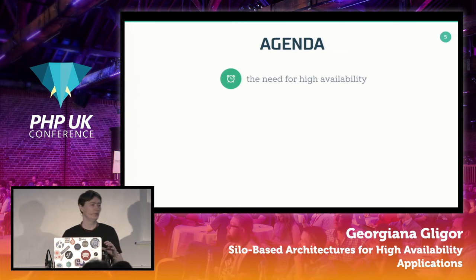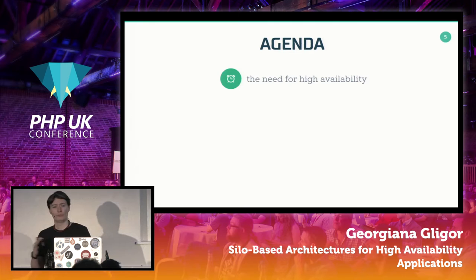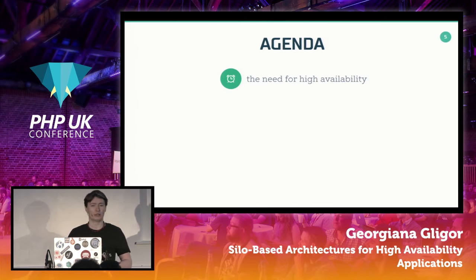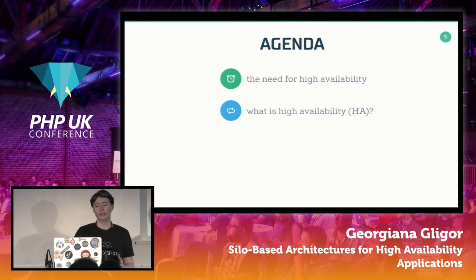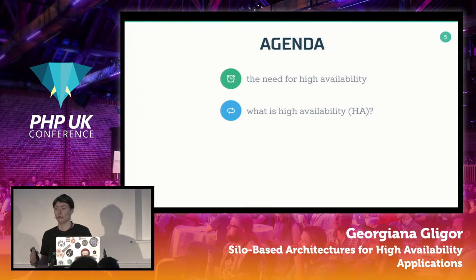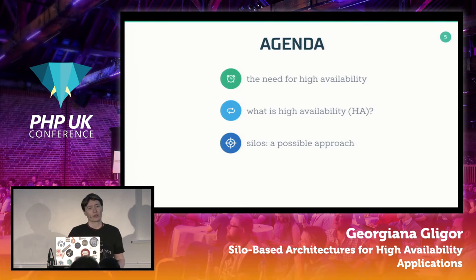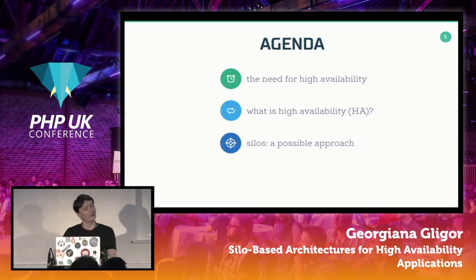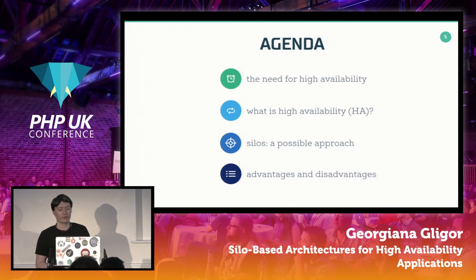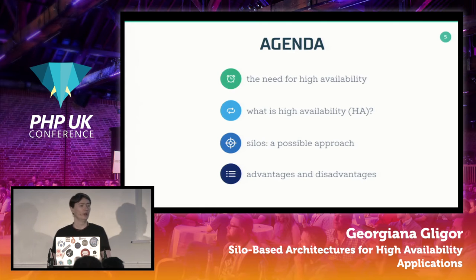Let's see what we're going to talk about today. First, I want to introduce the need for high availability, because maybe you don't know you need to address these topics. Then we'll define high availability — what it really is and what it's not. Then we'll discuss the approach we've been using in a very large and complex system for a US customer, followed by the advantages and disadvantages that come with this solution.